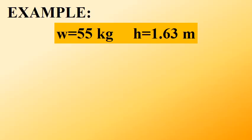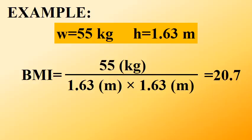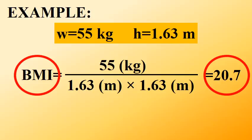Here is an example. If a person's weight is 55 kilograms and height is 1.63 meters, then the body mass index will be 55 divided by the square of 1.63. This means that the person's body mass index is 20.7.